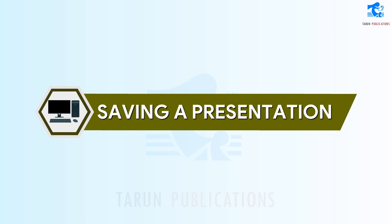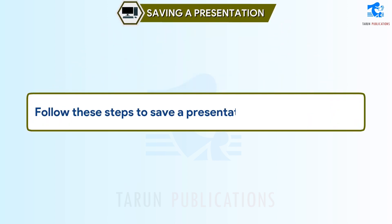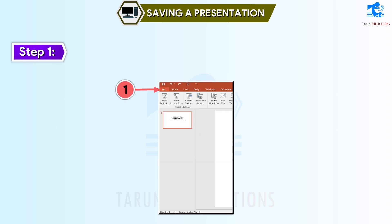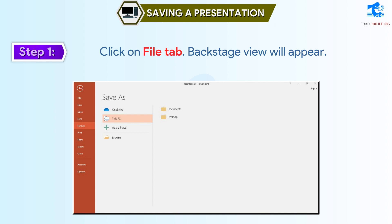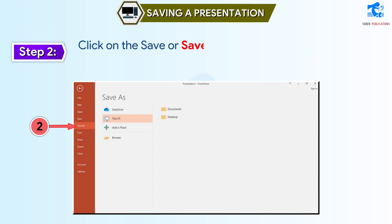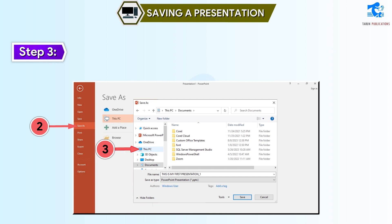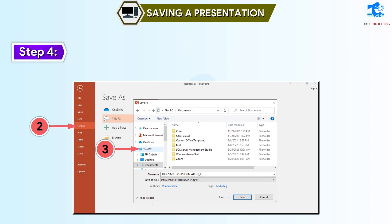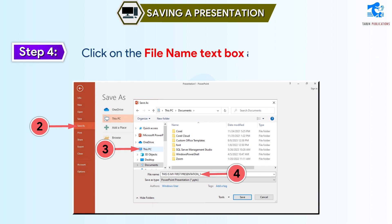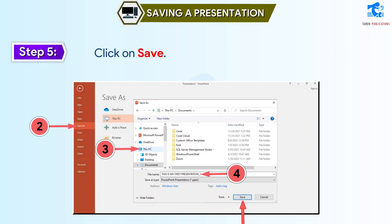Saving a Presentation. Follow these steps to save a presentation. Step 1: Click on the File tab — the Backstage view will appear. Step 2: Click on the Save or Save As button. We can also click on the Save button on the Quick Access toolbar. Step 3: Go to the folder or location where you want to save the file. Step 4: Click on the File Name text box and type a name for the file. Step 5: Click on Save. Your presentation will be saved.